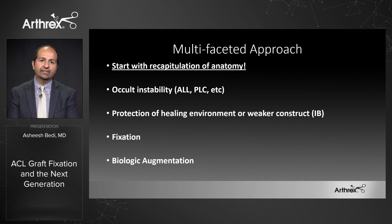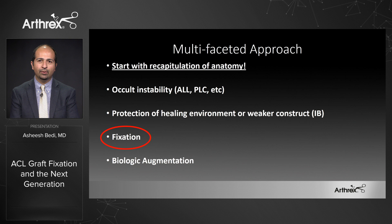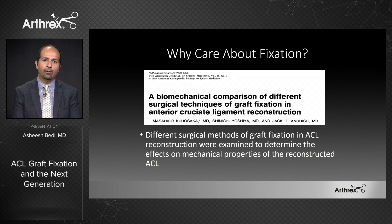When looking at a multifaceted approach to improving our outcomes, anatomy has been a large focus, but we don't want to forget other principles. We know about occult instability and injuries to the anterolateral capsule, ALL, and posterolateral corner. We recognize that even if we do everything correctly anatomically, sometimes the biology is against us and tendon-to-bone healing is a challenge. Specifically, this area of fixation is an opportunity for us to improve our outcomes as surgeons.